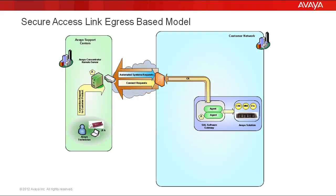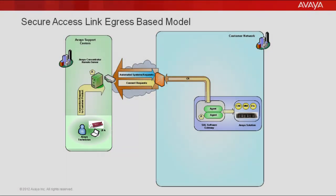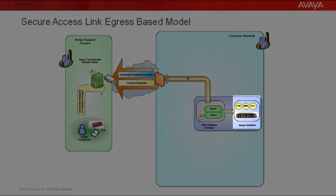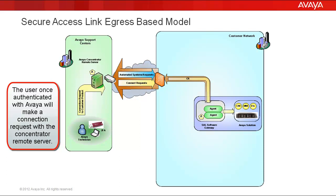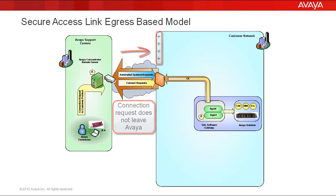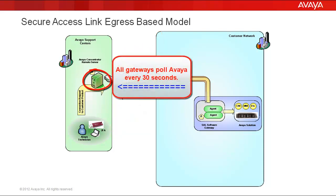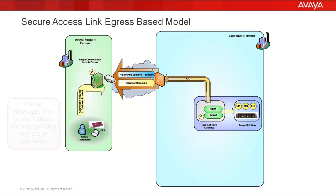Let's now walk through how this works. Suppose the user on the left at the Avaya data center wants to connect to this Communication Manager or CM server in your network. The user, once authenticated via two factors at Avaya, will first need to make a connection request with the Avaya concentrator remote server. This connection request never leaves Avaya, but rather sits and waits for polling messages from the SAL gateway, which occur every 30 seconds. The polling messages from the gateway are looking to see if there are any pending connection requests for any of the devices it manages.